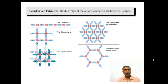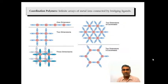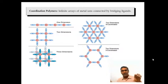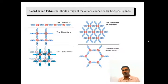In summary, coordination polymers are infinite arrays of metal ions connected by bridging ligands, also called organic linkers. We can see a one-dimensional structure where the ligand and metal extend in a straight line, two-dimensional structures, three-dimensional structures, and also two-dimensional three-coordinated arrangements. These are some pictorial representations of how coordination polymers are formed.